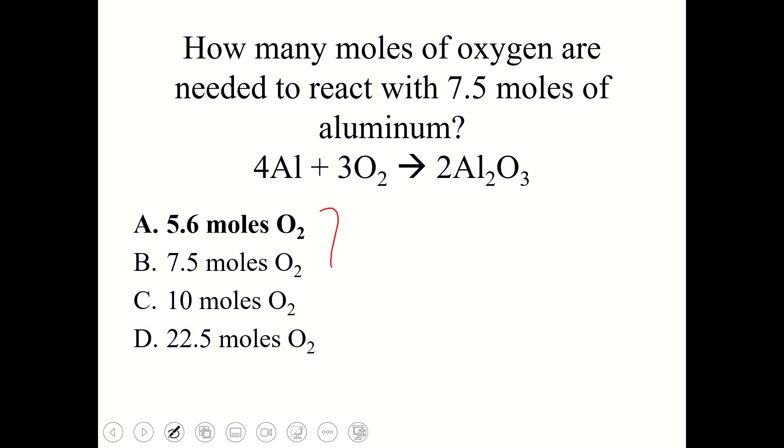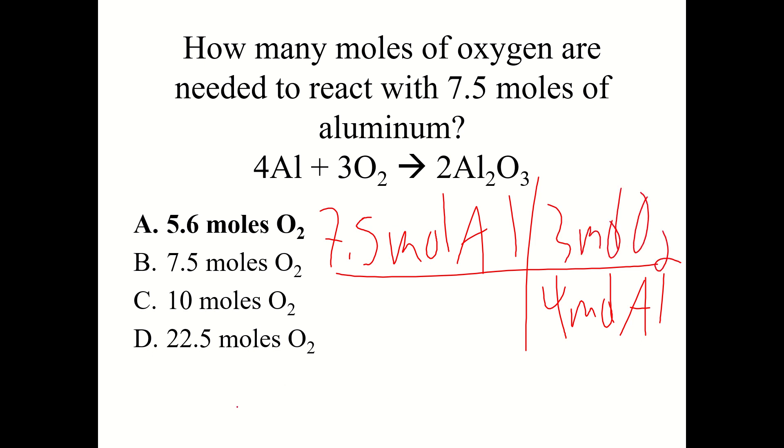So I've got 7.5 moles aluminum. The question is asking how many moles of oxygen gas are needed. I'm trying to go from aluminum to oxygen gas. So I would write 4 moles aluminum on the bottom and 3 moles O2 up top. And you get the answer A, 5.6 moles O2.